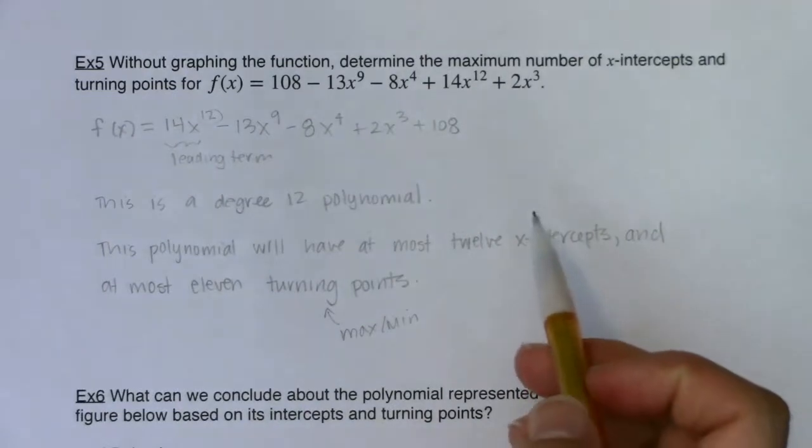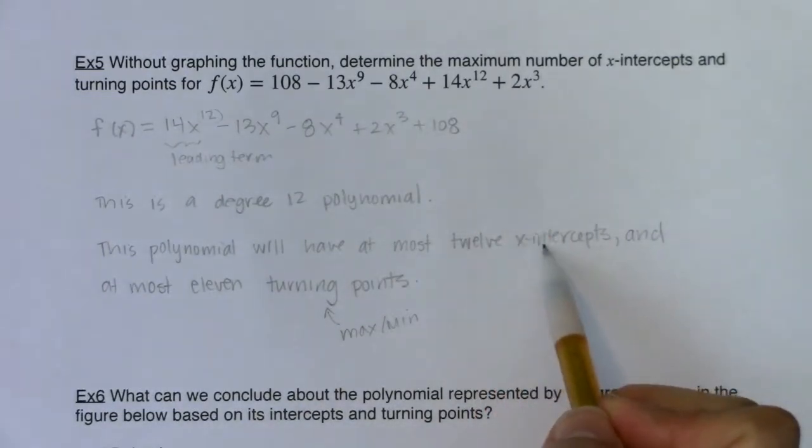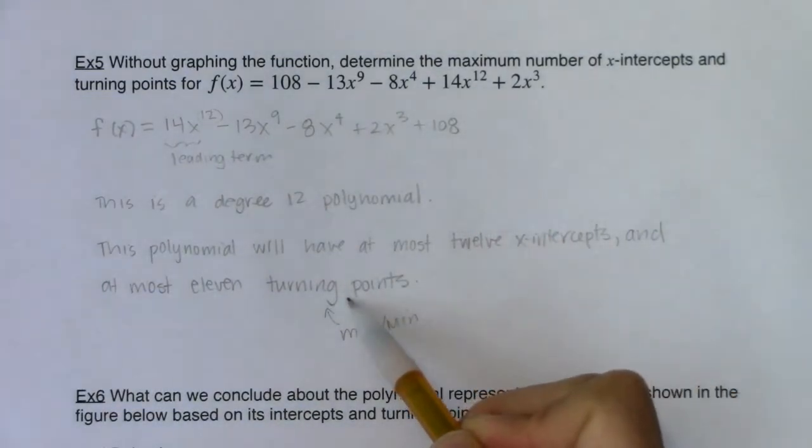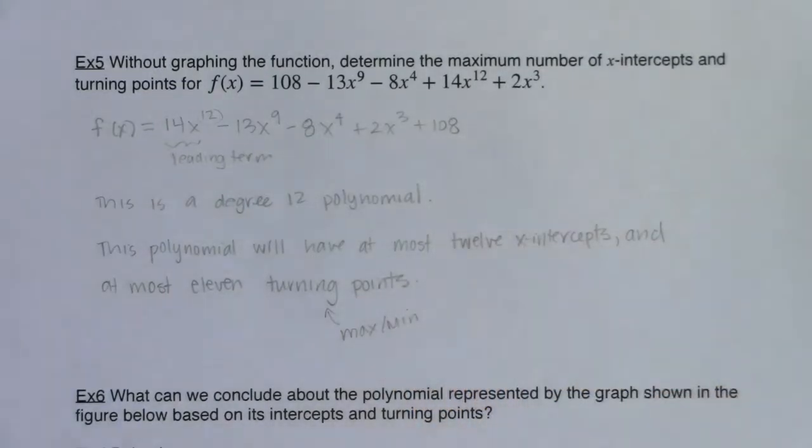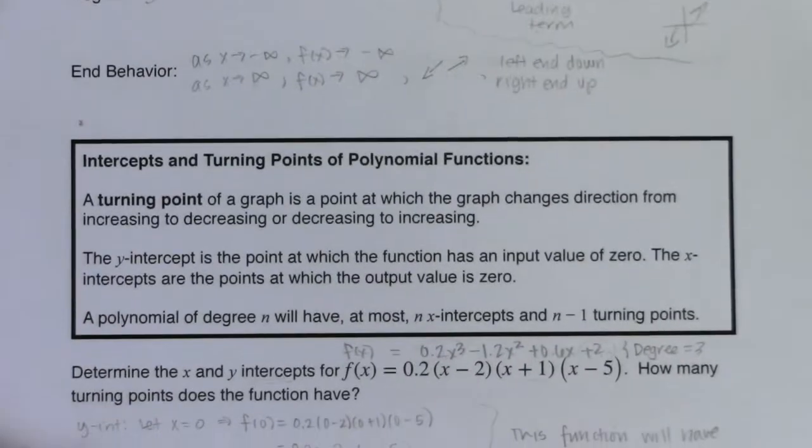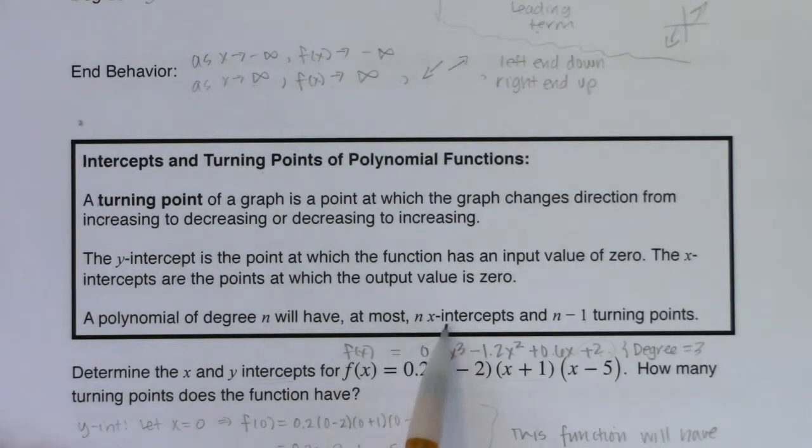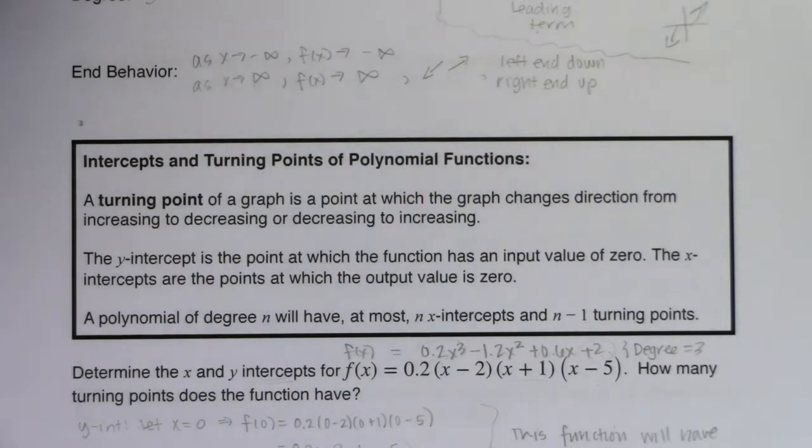There are theorems out there to help you determine the exact number of x-intercepts and the exact number of turning points. But the sentence we were referring to before, it's just kind of a quick and dirty way to get an idea. So this is just, I know there's at most 12 x-intercepts and 11 turning points. If you ever want to find out specifically how many there are, there's other theorems out there. And I'm happy to show them to you if you want. Just give me a shout and we can hang.